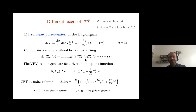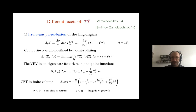Since this is a composite operator, one has to define it with some care. One way is to point-split — define this composite operator by point-splitting the two insertions. The crucial observation of Zamolodchikov was that when you take the limit of this regulator to zero, the limit is non-singular up to total derivative terms. When you take this particular combination of the determinant, the singular terms combine to give a total derivative, so if you can ignore these total derivatives the operator is well defined.